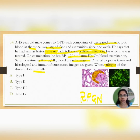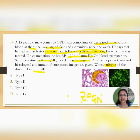In Type 1 RPGN there will be linear deposits, mainly due to anti-GBM antibodies. They will give you a history more consistent with Goodpasture syndrome. But here there is no such history, so Type 1 is not the answer. Type 2 is mainly immune complex mediated.